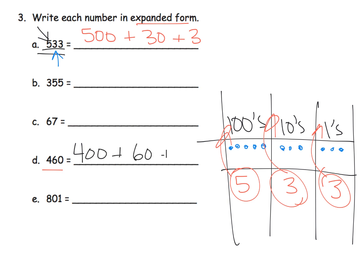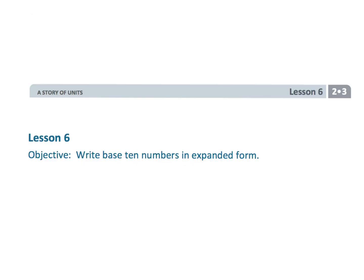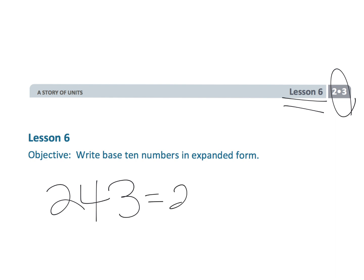If they wanted to, they could say plus 0 ones for 460. And similarly, 801 would be 800 plus 1. If they wanted to, they could acknowledge the zero by saying 800 plus 0 plus 1 — and that would be okay, but really 800 plus 1 is the answer we're looking for. And that wraps up Grade 2, Module 3, Lesson 6, where we're taking regular numbers and writing them in expanded form.